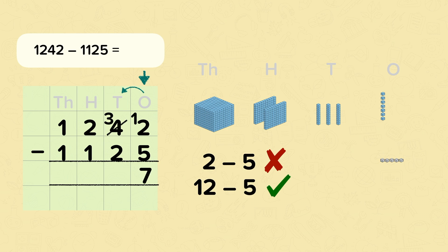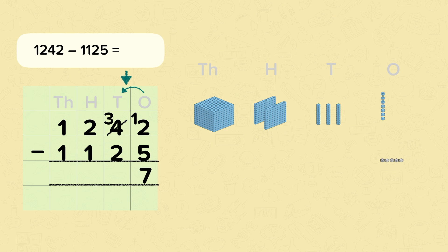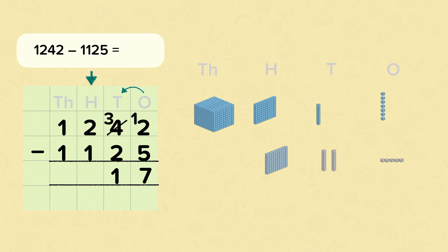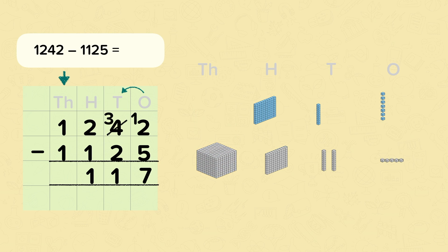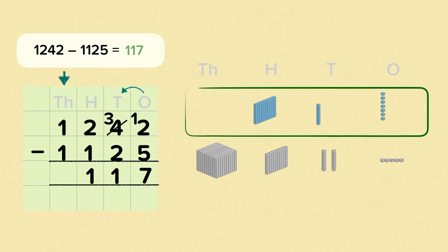Twelve subtract five is seven. Now we continue into the tens column: here we've got three, we need to subtract two, so we've got one. Now into the hundreds column: two subtract one is just one. And finally into the thousands column: we've got one and we need to subtract that one, so now we haven't got any thousands. But remember we just don't need to put zero at the front of a number. So our answer here is one hundred and seventeen.